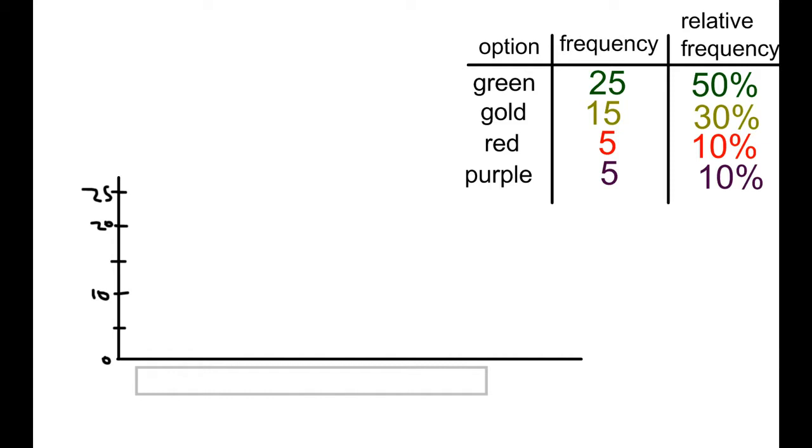Next thing we need is our categories on the bottom. So I have these typed up. The one thing you want to make sure you do is put them in order. Now we talked about this on the frequency chart.